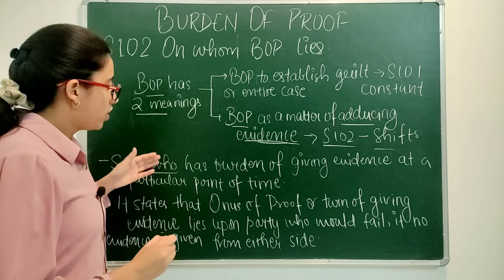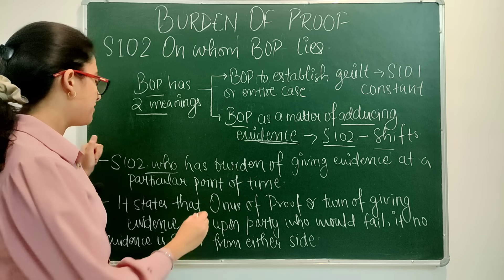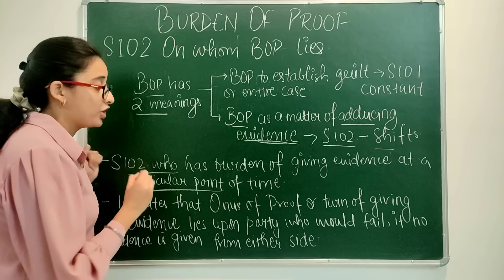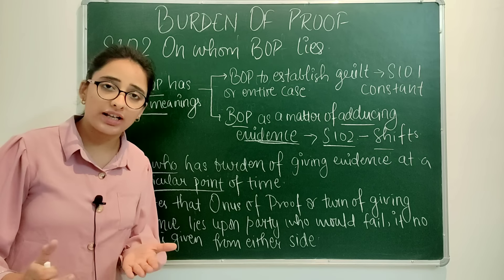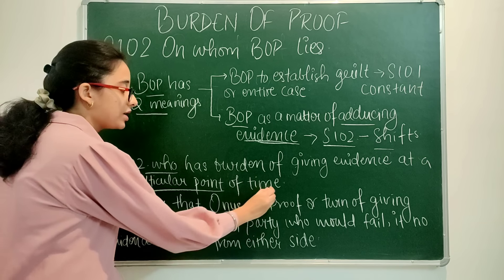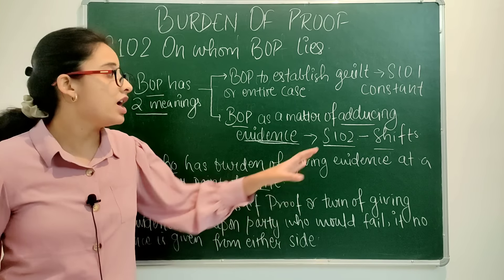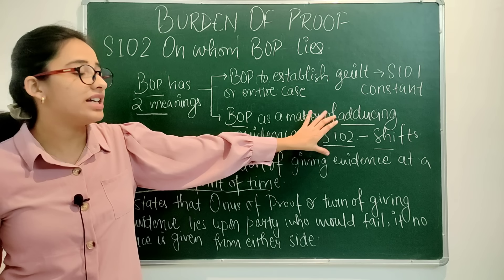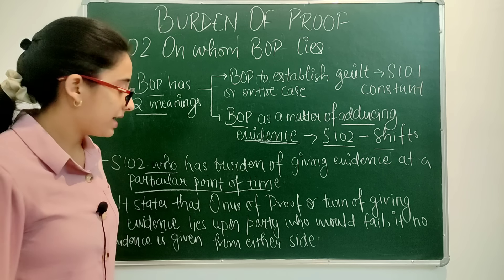Section 102 states who has the burden of giving evidence at a particular point of time. In any ongoing case, at that particular point in the proceeding, on whom lies the burden to give evidence — section 102 deals with that.